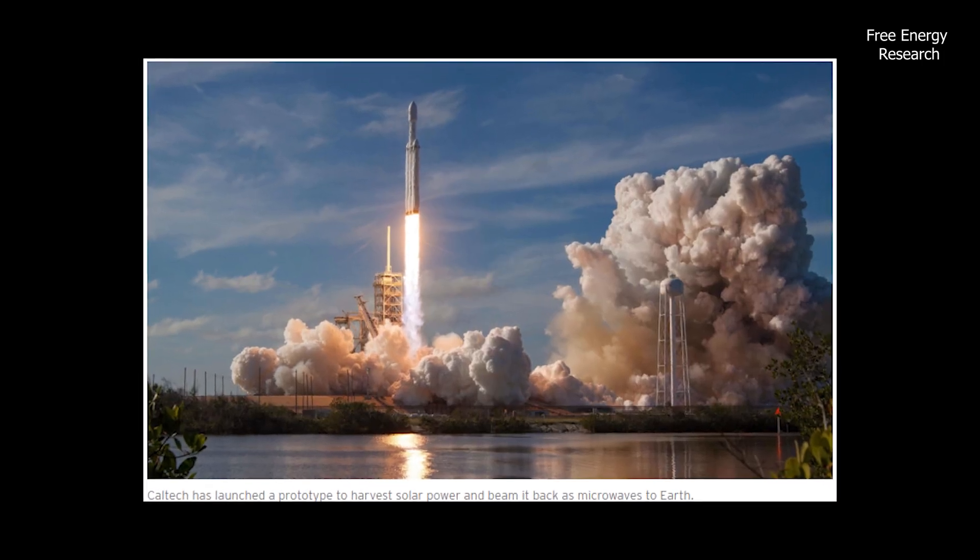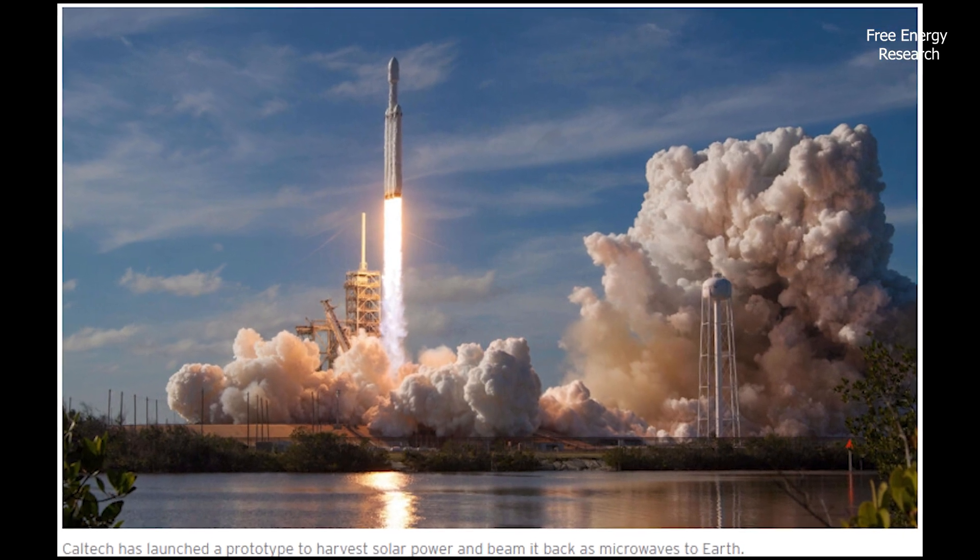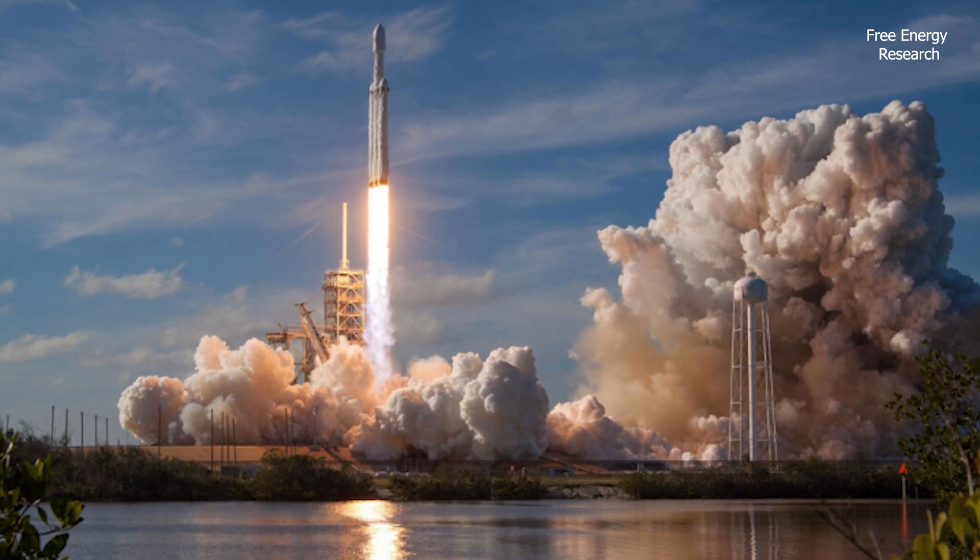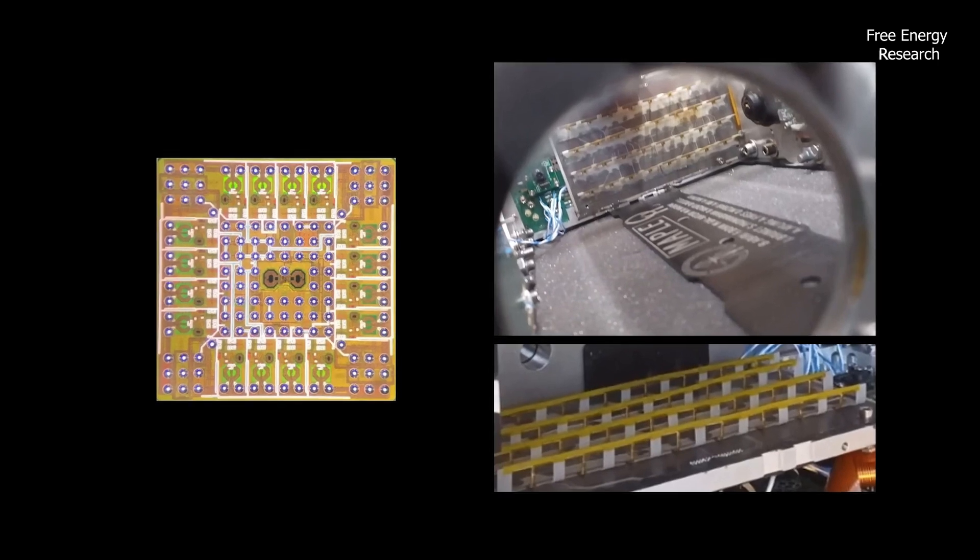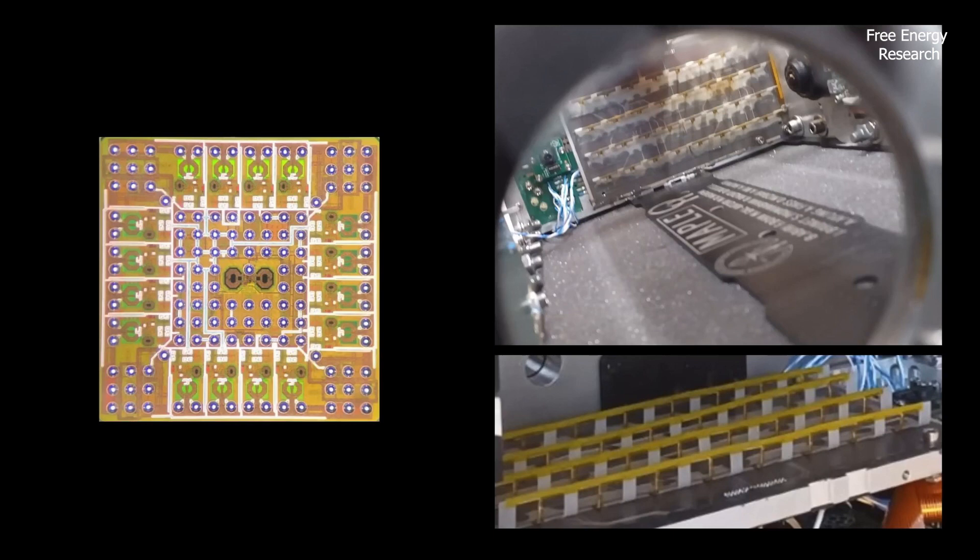In a world first, the researchers beamed solar energy to earth from a spacecraft called MAPLE, which was launched to orbit in January. Through the experiments run so far, scientists received confirmation that MAPLE can transmit power successfully to receivers in space, said Ali Hajimiri, professor of electrical engineering at Caltech.